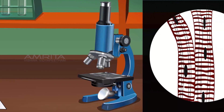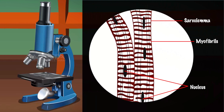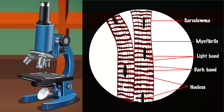Observations: The striated muscle cells are very long and have cylindrical fibres. The fibres are enclosed within a membrane called sarcolemma. These fibres are nucleated, which means they have many nuclei. Each cell cytoplasm consists of many myofibrils. Each myofibril contains alternate light and dark bands, giving a striated appearance to the fibres.